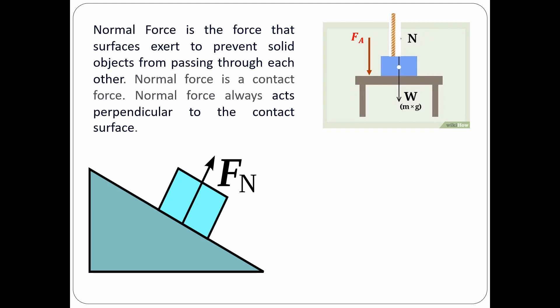Now let's talk about how we can calculate the normal force. Let's say we have a 10 kilogram box on a horizontal surface. Calculate the normal force that the surface exerts on the box. So the first thing to do is to draw a free-body diagram. We have an upward normal force and a downward weight force.